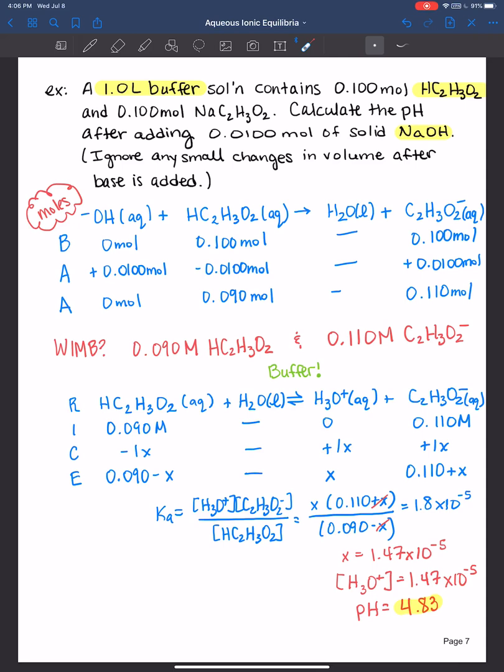Speaking of buffers, we've also learned that if x is small enough to ignore and you have a buffer in your beaker, you can use the Henderson-Hasselbalch and you can skip the RICE table. So let's go ahead and plug this into the Henderson-Hasselbalch equation. Remember, Henderson-Hasselbalch is equal to the pKa. pKa is the negative log of the Ka. So I'm going to do that plus the log of the conjugate base over the acid. So this is the Henderson-Hasselbalch. And when you plug that into your calculator, you get 4.83.